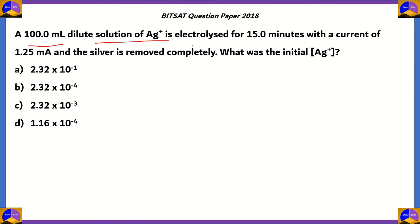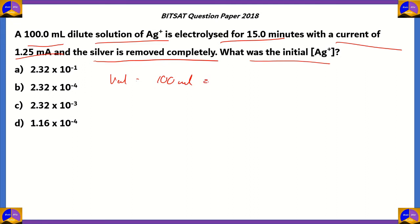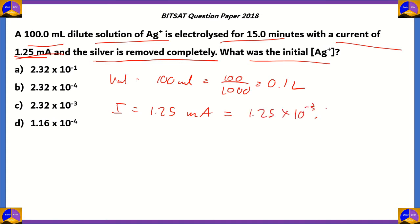Next question: a 100 mL dilute solution of Ag⁺ is electrolyzed for 15 minutes with a current of 1.25 milliampere, and the silver is removed completely. What was the initial concentration of Ag⁺? The volume is 100 mL, which is 0.1 liters. The current is 1.25 milliampere = 1.25×10⁻³ amperes, and the time is 15 minutes = 900 seconds.